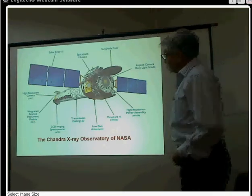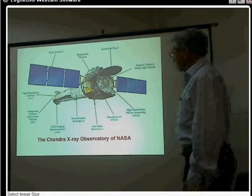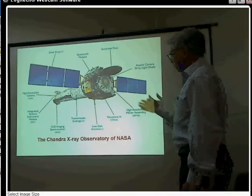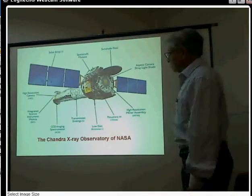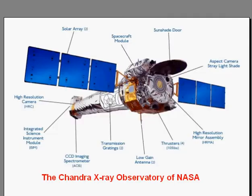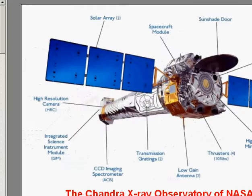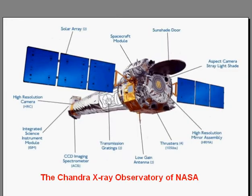In the last slide I showed you the principle of X-ray reflection and how X-ray imaging telescopes work. Here you can see a slide of an X-ray imaging telescope known as Chandra. This telescope was named after the famous astrophysicist S. Chandrasekhar, who is of Indian origin, and this is one of the most sophisticated and complex instruments ever developed by NASA. It has now been working in space for more than 10 years.